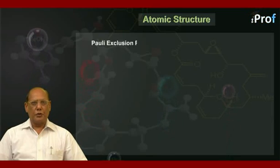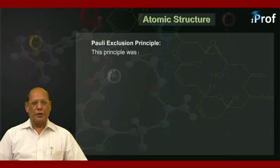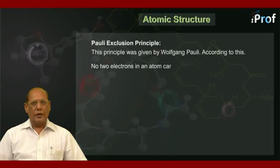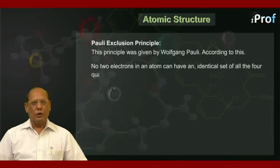Pauli Exclusion Principle. This principle was given by Wolfgang Pauli. According to this, no two electrons in an atom can have an identical set of all the four quantum numbers.